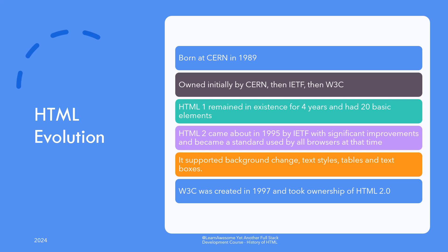The second version, HTML 2.0, came about in 1995 and was a significant improvement, and became a base standard used by all browsers of that time, supporting changing background, text styles, and introduced tables and text boxes. W3C was formed at that time and took ownership of HTML 2.0 from IETF. It was around then that the web was scaling up, and problems really started to surface.